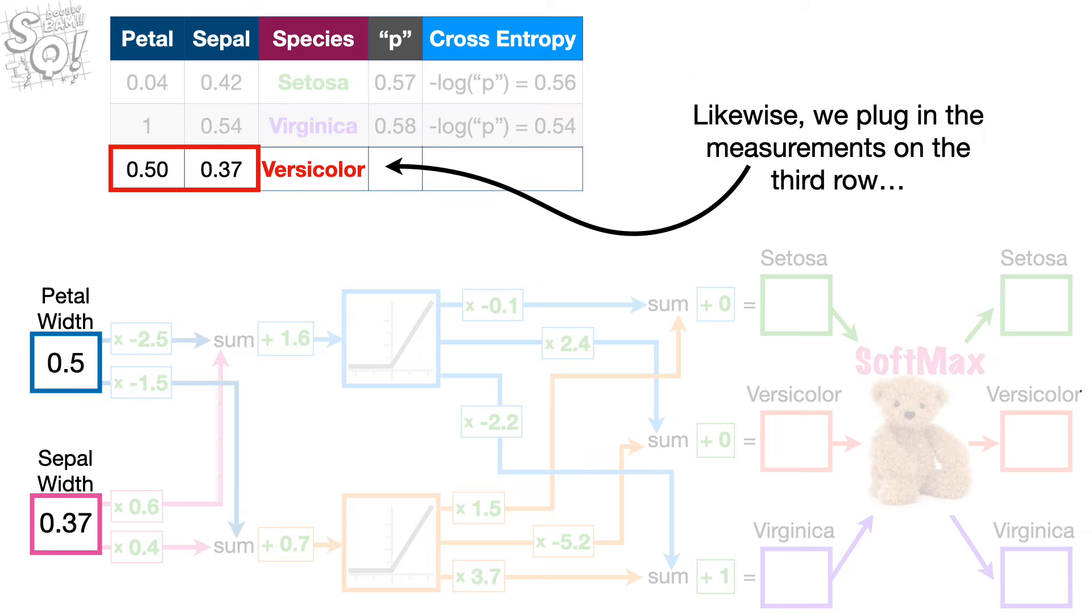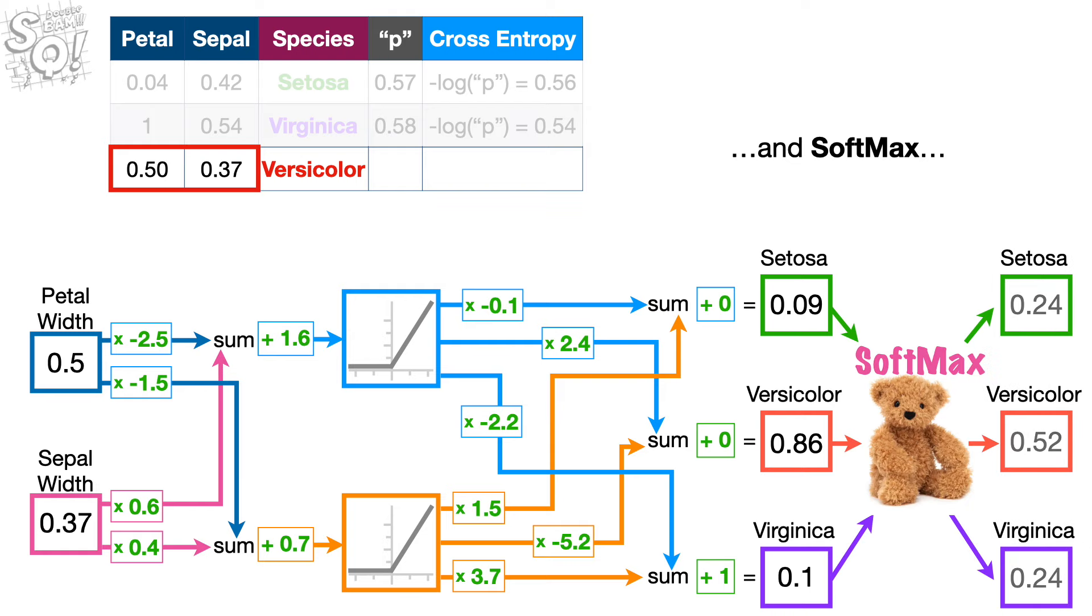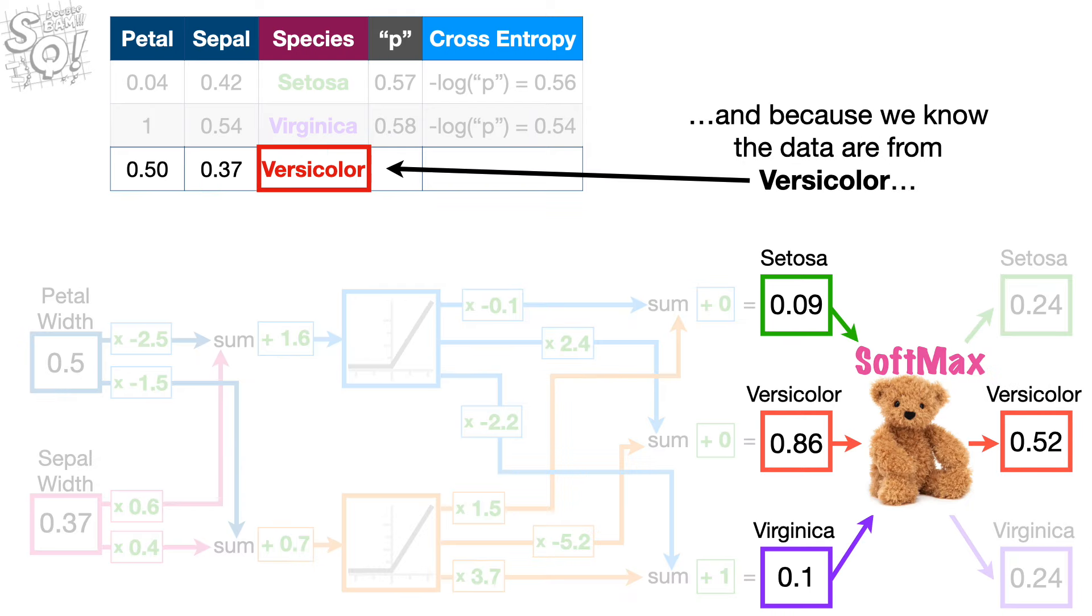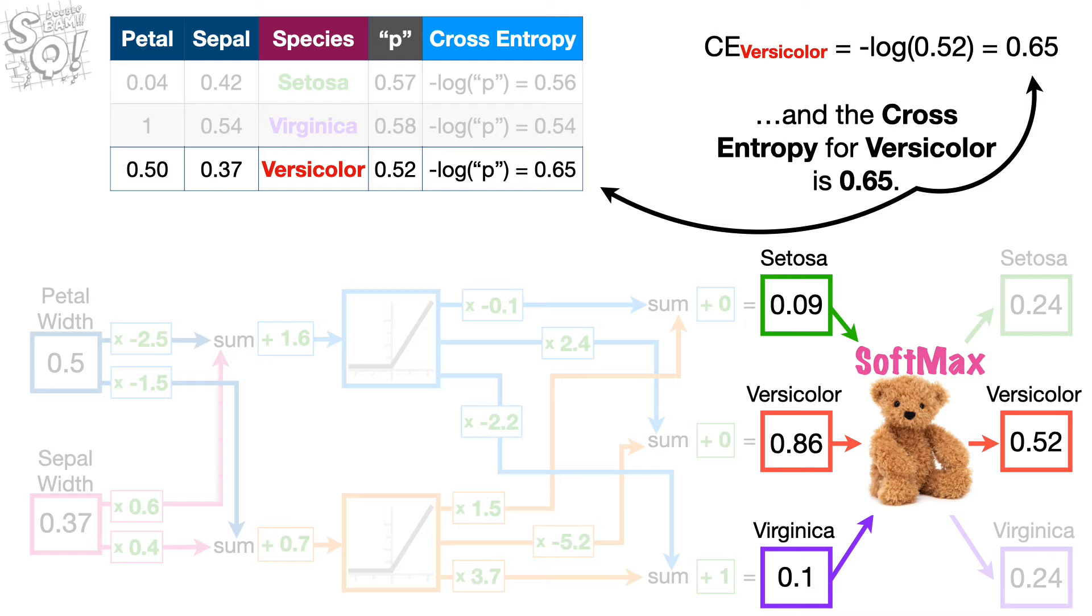Likewise, we plug in the measurements on the third row, run the numbers through the neural network and softmax, and because we know the data are from Versicolor, we plug the predicted probability for Versicolor, 0.52, into the cross-entropy equation, and the cross-entropy for Versicolor is 0.65.